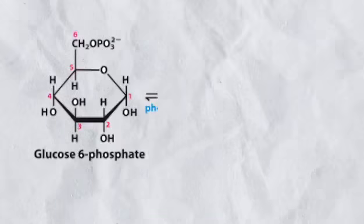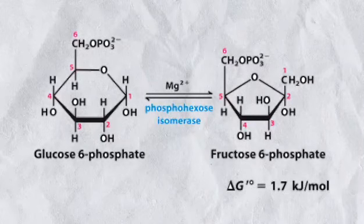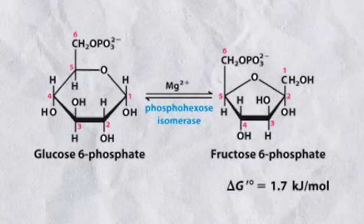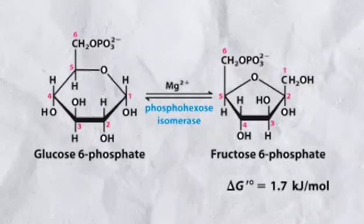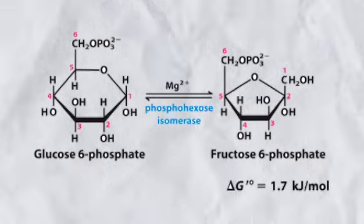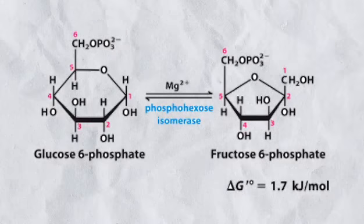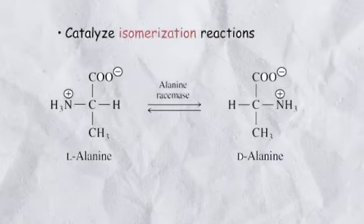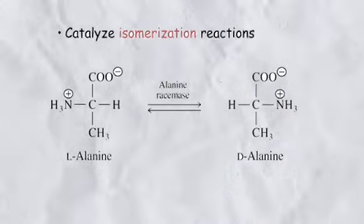Type number five: Isomerases. Speed up isomerization reactions. These are reactions in which all the original atoms in the reactant are retained but are rearranged to form an isomer of the reactant. Isomers are molecules with the same chemical formula but different arrangements. Examples include glucose phosphate isomerase and alanine racemase.